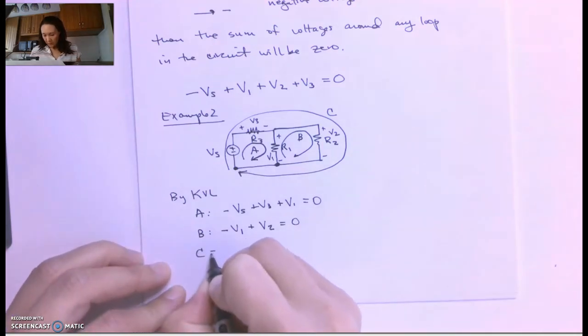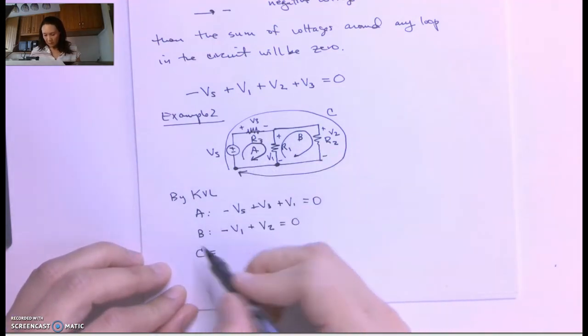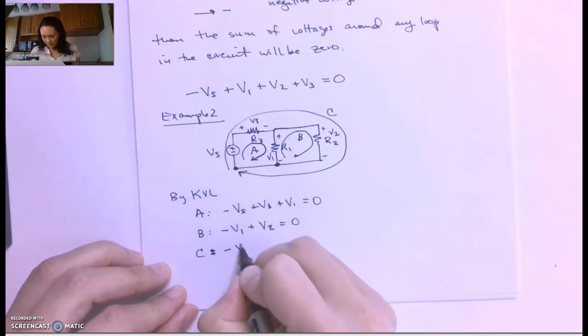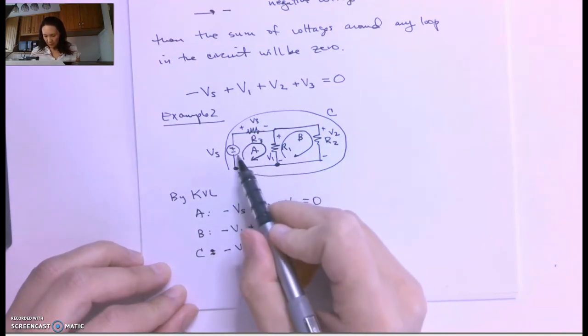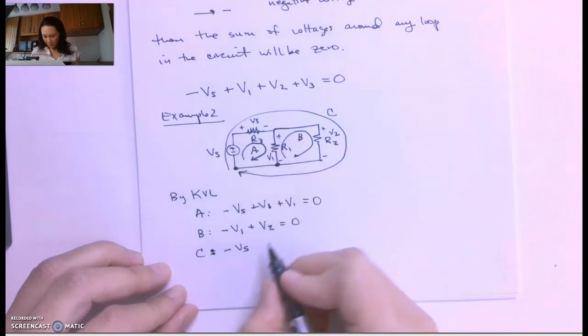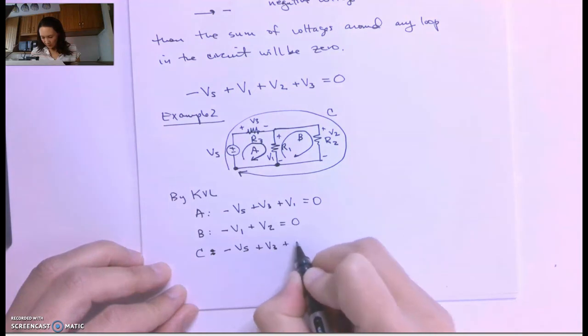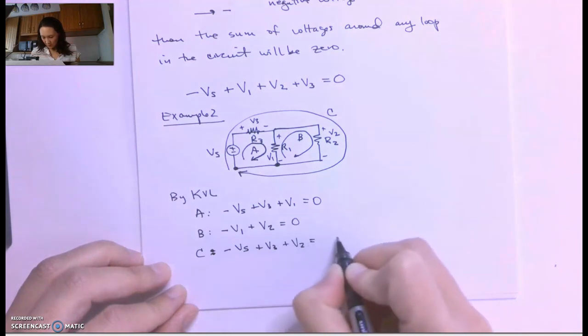And then at loop 3, my outer loop, I'm going to encounter VS. I'm going to enter it through the negative side. And then I'm going to encounter a positive V3. And then I'm going to encounter a positive V2. And that's equal to zero.